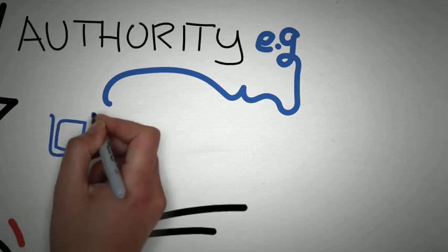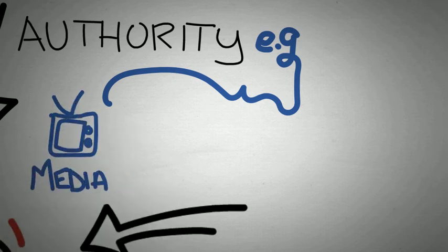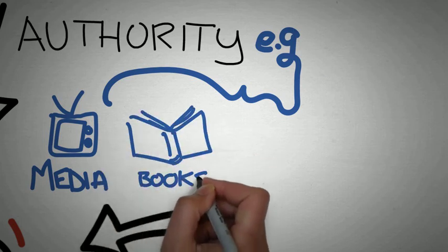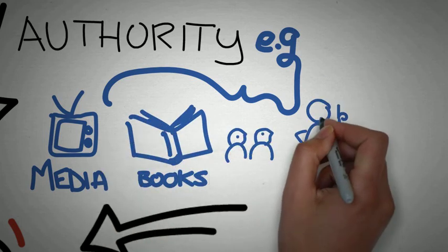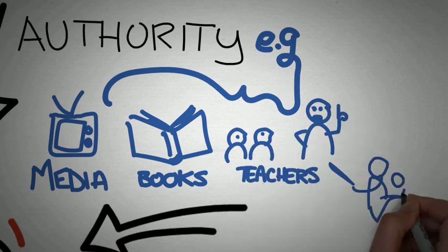So you might have an authority like the TV. I know this probably doesn't look like a TV to many of you, but in my generation this is what TVs look like. It could be from a book, so from your texts. It could be from teachers, or it could be from friends.